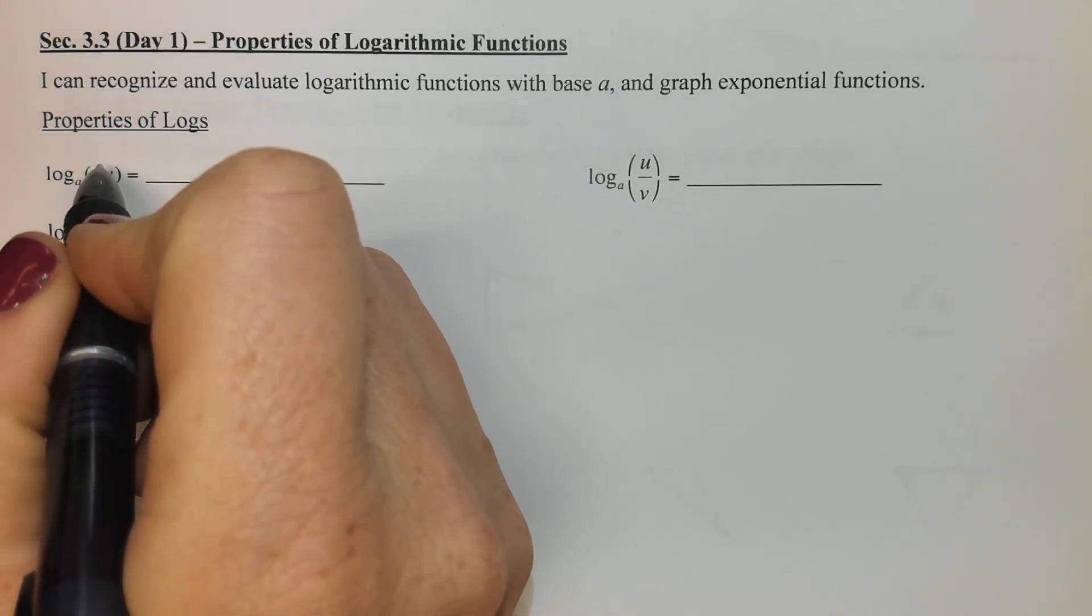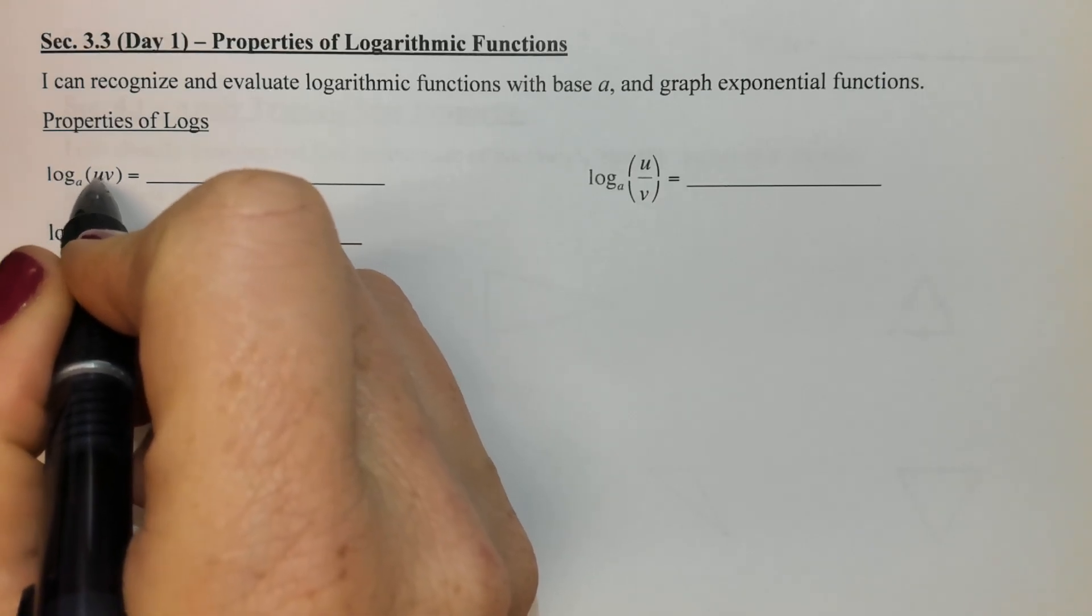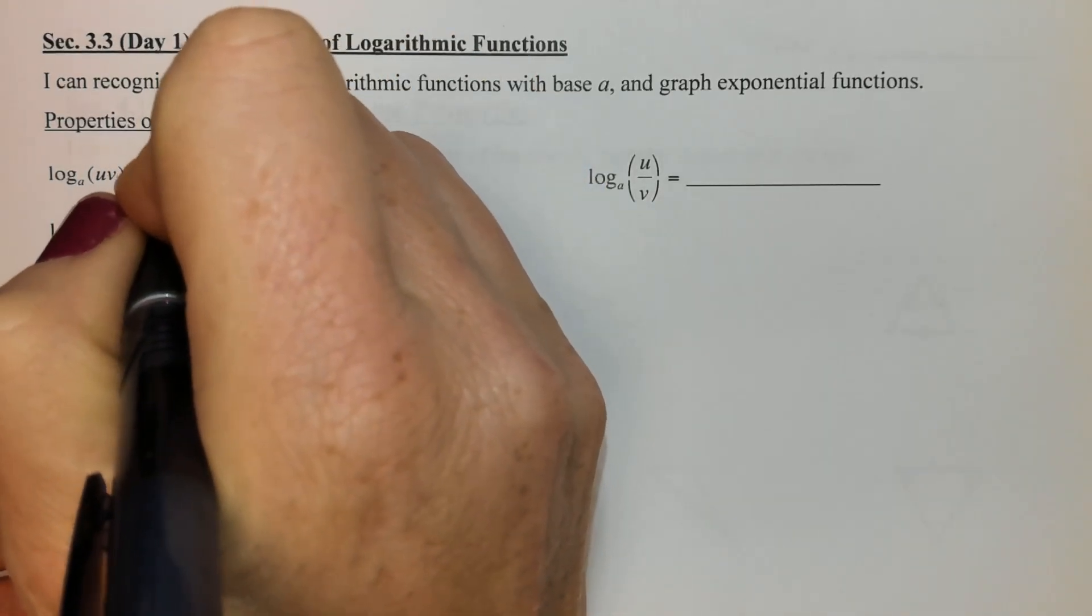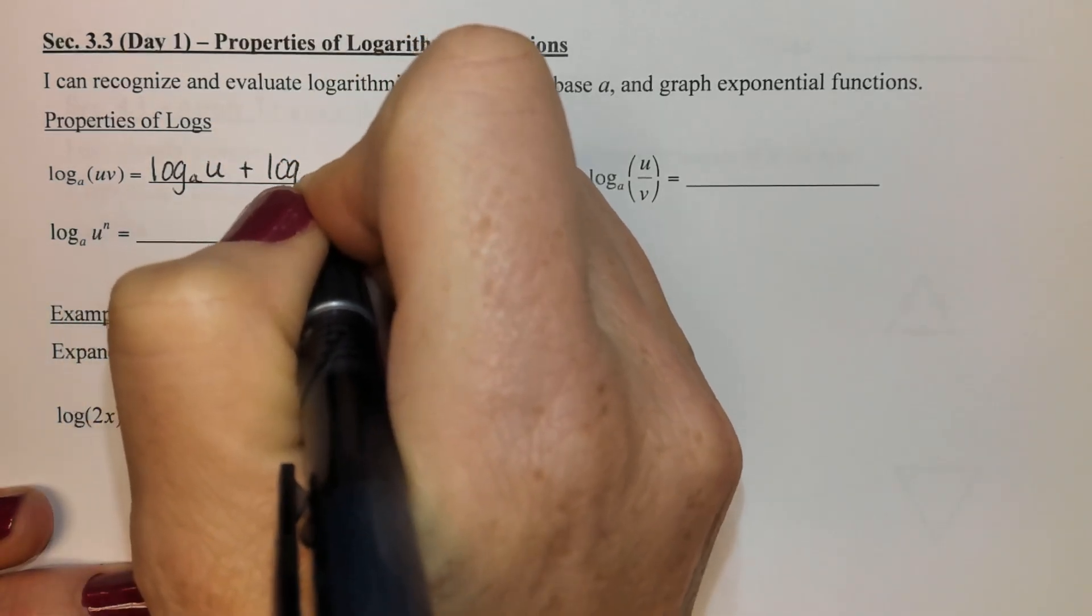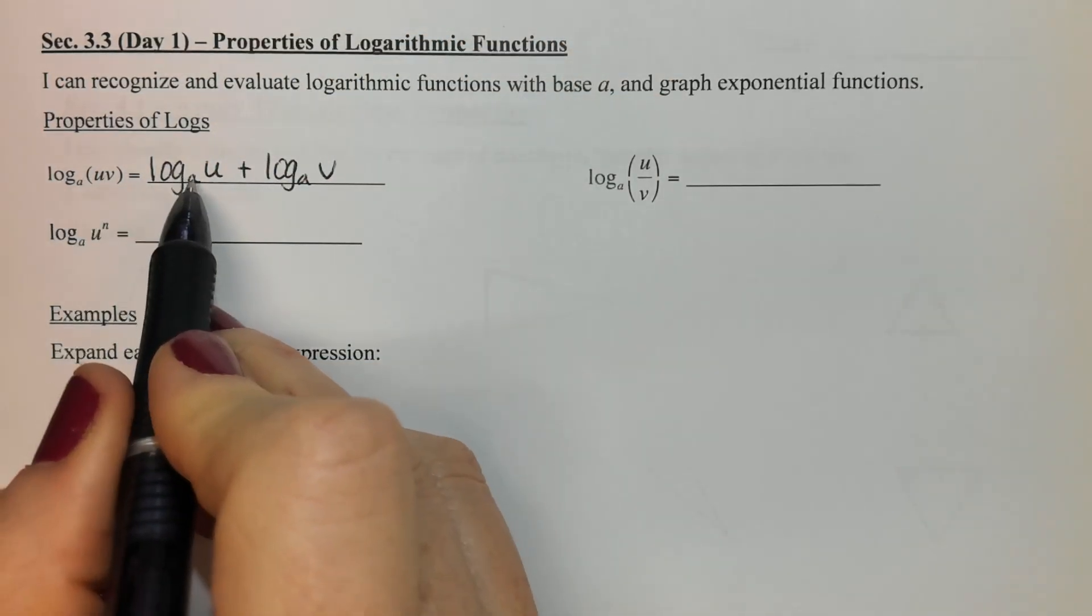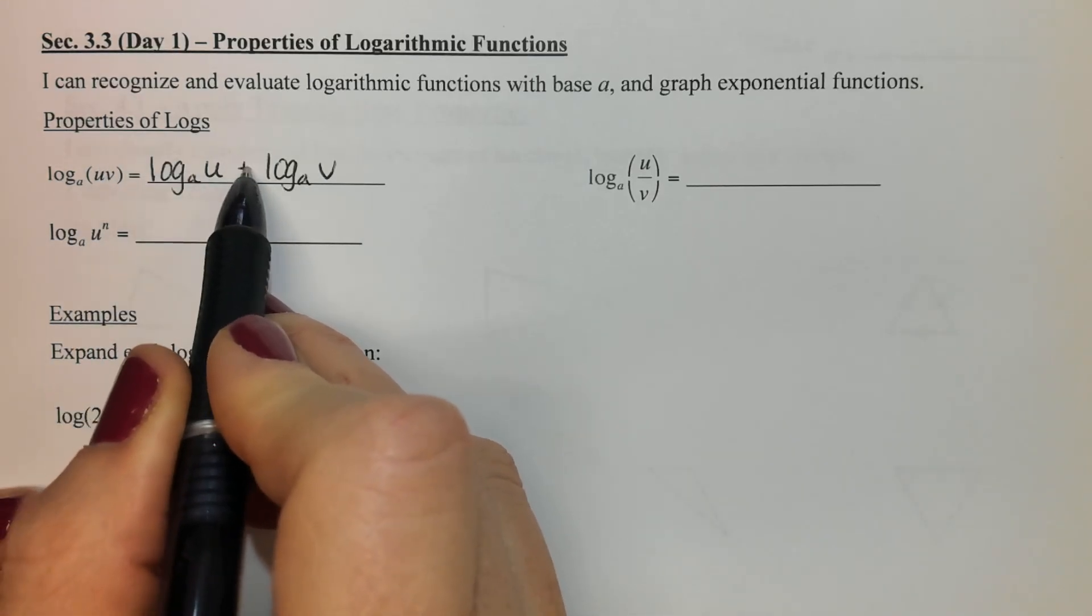When you have a log and you are multiplying two values together or two unknowns together, you can actually separate those two logs with addition. So everything stays the same, same base for both of them. I'm just splitting that multiplication and turning it into addition.